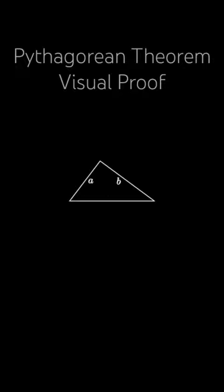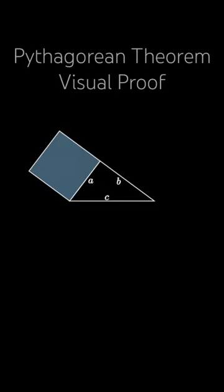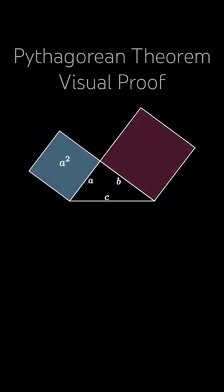Suppose we have a right triangle with legs of length a and b and a hypotenuse of c. We can draw an a by a square off the side of length a, we can draw a b by b square off the side of length b, and we can draw a c by c square off the hypotenuse.